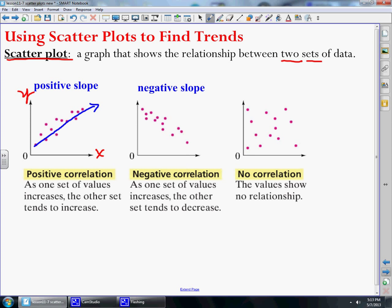Now a negative correlation is as x increases, the y values start to decrease. We can tell that by drawing a line in the data. We can see that the line slants downward, which means it has a negative slope and a negative correlation.